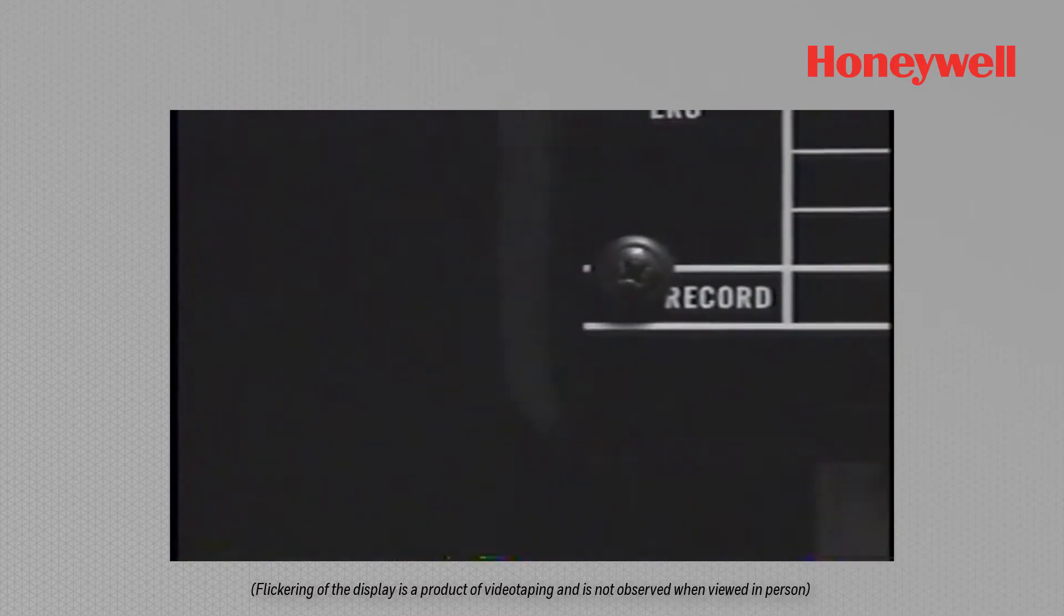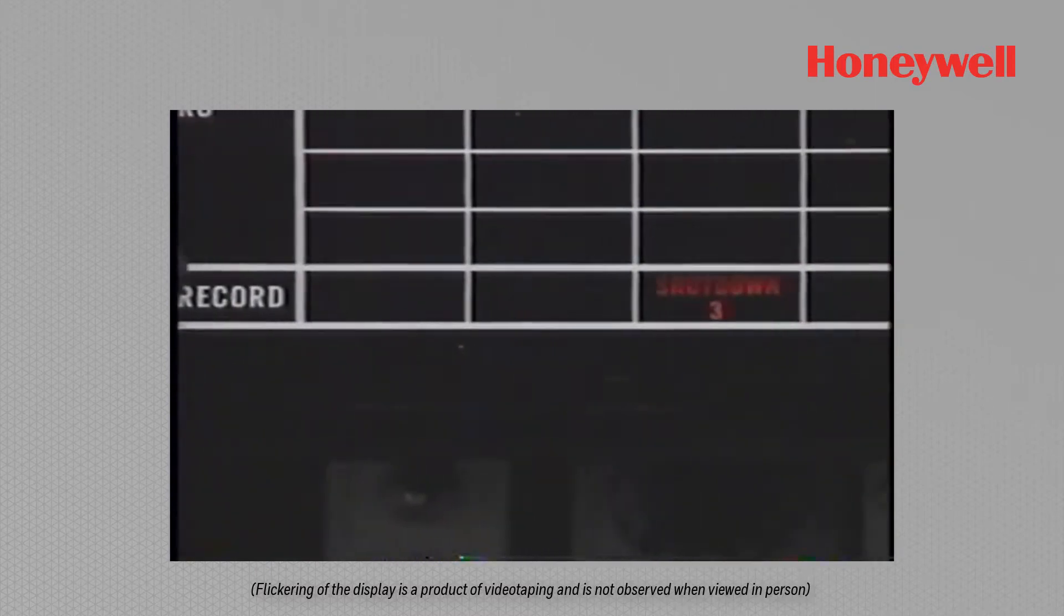And the record select line displays the position of the record select switch. This display is illuminated continuously when the ECU is powered, except during display of mini-flags, lamp test, or self-test.